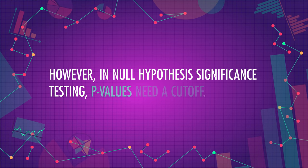Our p-value of 0.18 tells us that if we took a sample like this repeatedly, about 1 out of every 5 times we'd get a sample mean further from the mean than 2400 calories. Some statisticians see a p-value as a continuous measure of evidence — a p-value of 0.18 might be considered weak evidence, but it's better than 0.19, which is better than 0.20, and so on. However, in null hypothesis significance testing, p-values need a cutoff.